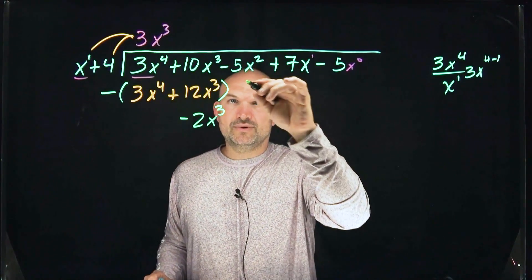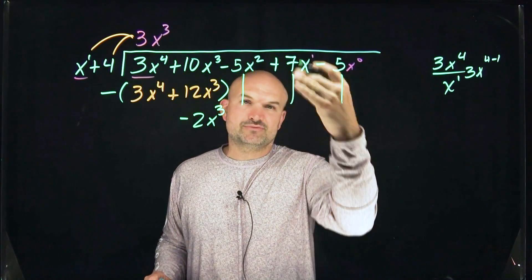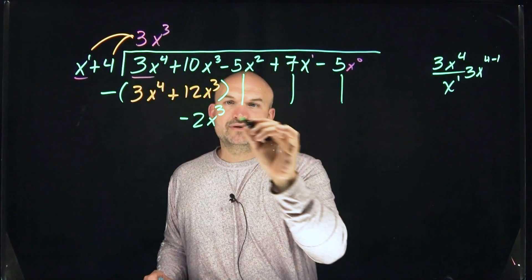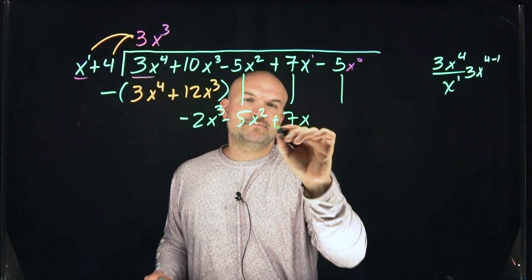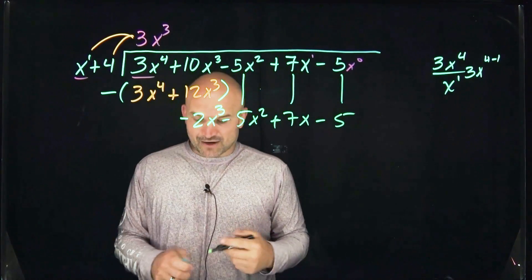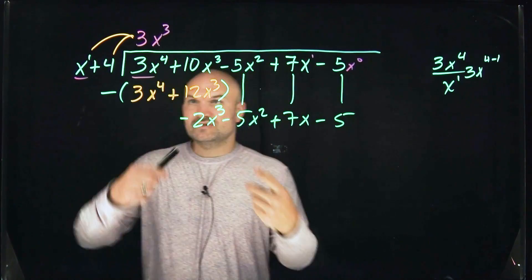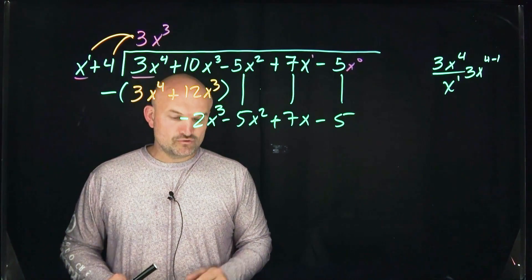Then we can go ahead and bring everything down because they technically were just subtracted by 0 of their terms. So therefore, it's negative 5x squared, it's a positive 7x minus 5. Now, we have just completed the first kind of round of applying long division. So all we're simply going to do is rinse and repeat.